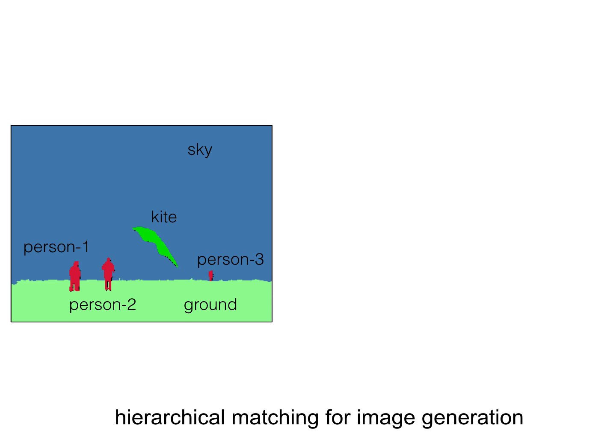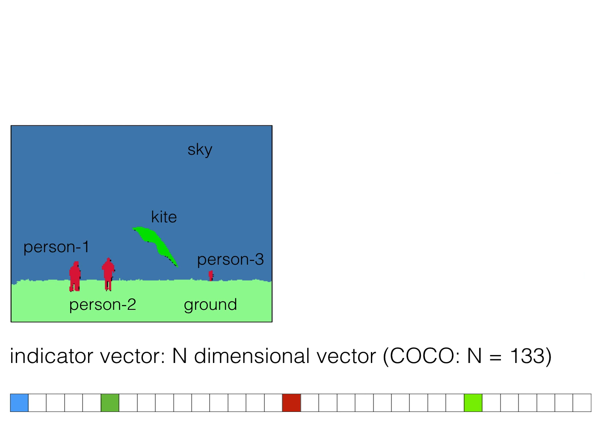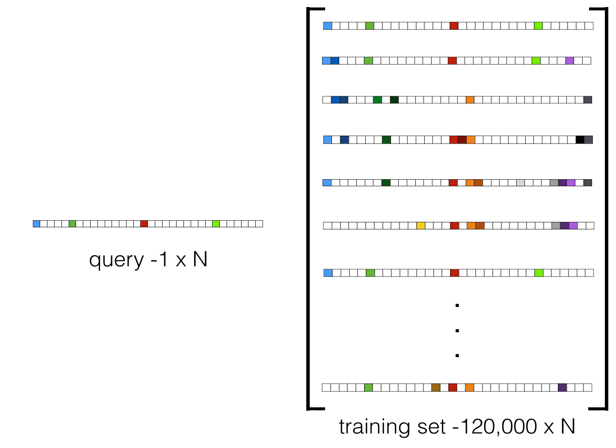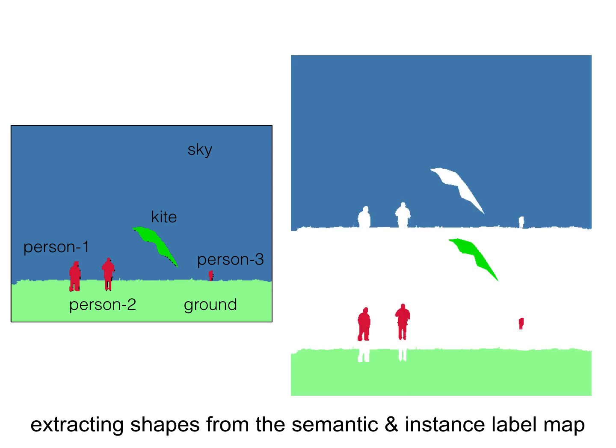Given an input label map, our goal is to generate multiple plausible images. We make use of hierarchical matching for efficient retrieval of images, shapes, and parts. We use an indicator vector that tells what categories are present. This indicator vector helps us to quickly find relevant examples in the training set without any expensive operation, reducing our search space for shapes drastically. We now have to look in less than 1% of the dataset to get the required shapes.